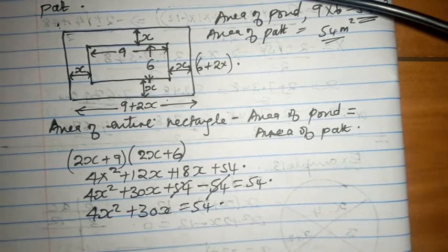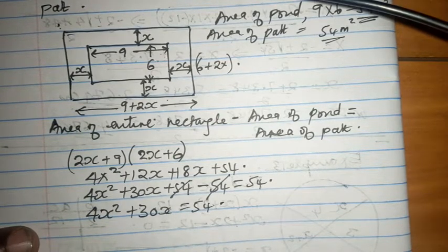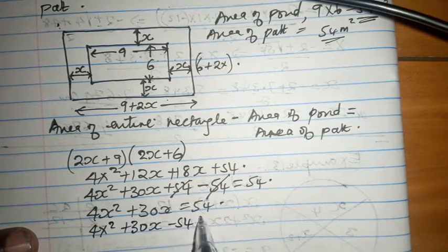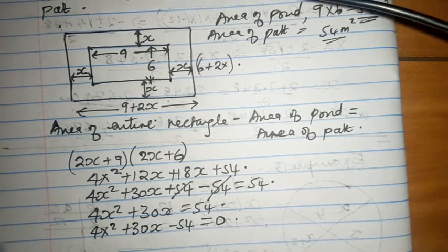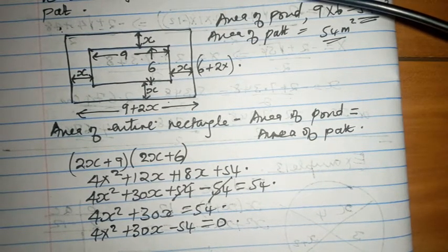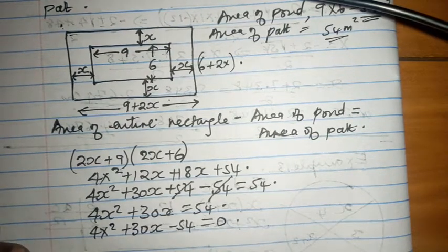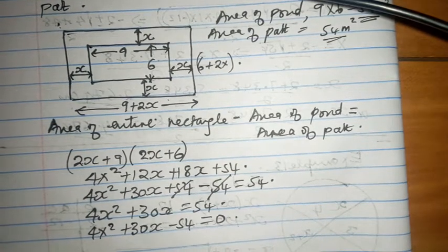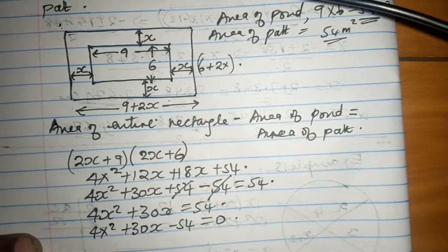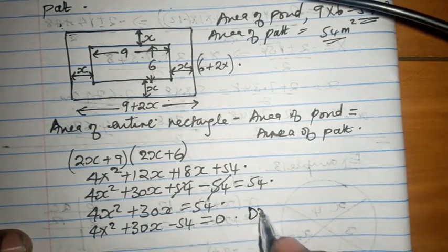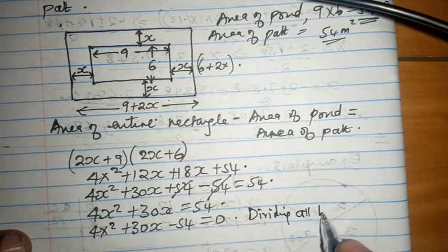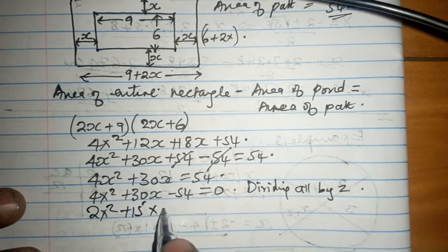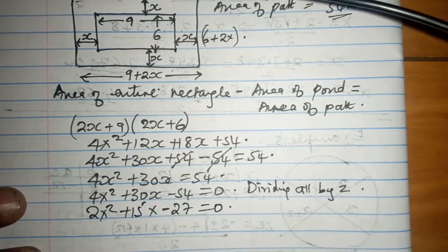Because it's going to be a quadratic equation, then 54 can come to the left and we have 4X squared plus 30X minus 54 equals 0. When you look at this, we can talk about simplifying. Because 4, 30, and 54 all can be divided by 2, dividing all by 2, we have 2X squared plus 15X minus 27 equals 0.